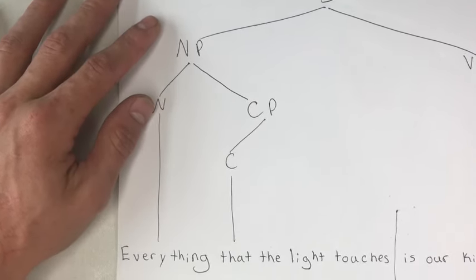That inner noun phrase can be divided into the determiner 'the' and the noun 'light,' and the verb phrase is really simply just one verb — 'touches.' You can see how this whole sentence is embedded in the larger sentence. Now we go to the larger predicate of the whole sentence, which is 'is our kingdom.' We have the verb 'is' and a noun phrase embedded within the verb phrase, which divides into the determiner 'our' and the noun 'kingdom.'